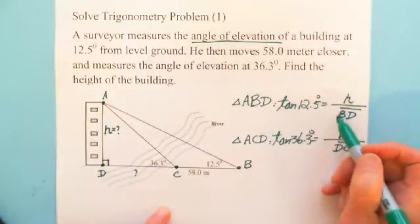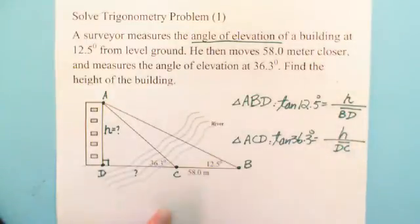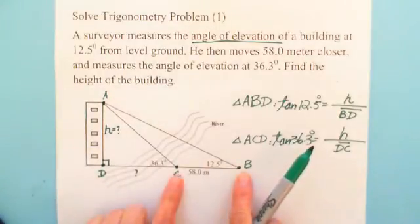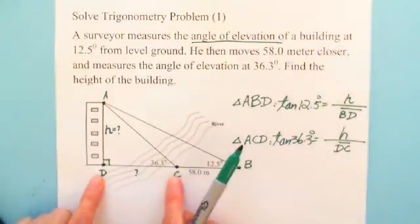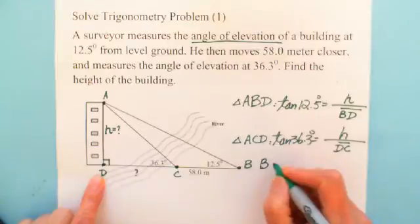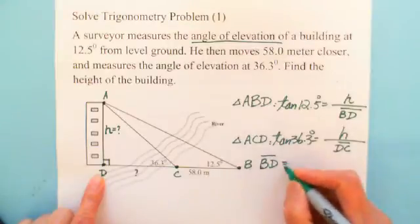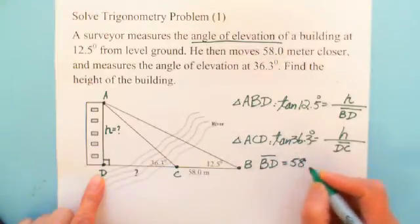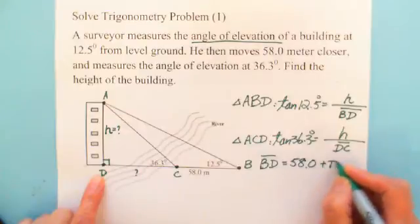So we can see H equals this one multiplied by that one. H equals BD multiplied by tangent 12.5, and also H equals DC multiplied by tangent 36.3. Also we can see the relation between BD and DC: BD is 58 plus DC.